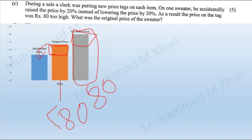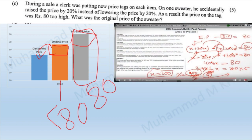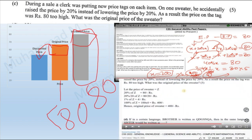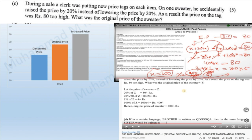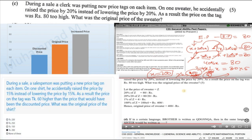However, some online solutions are misleading aspirants with wrong answers. The first incorrect solution calculates the value of x — the original price — as 200. The second incorrect solution calculates it as 400. Neither is correct. The confusion arises because of the similarity of this question with another question and its solution available on the internet.